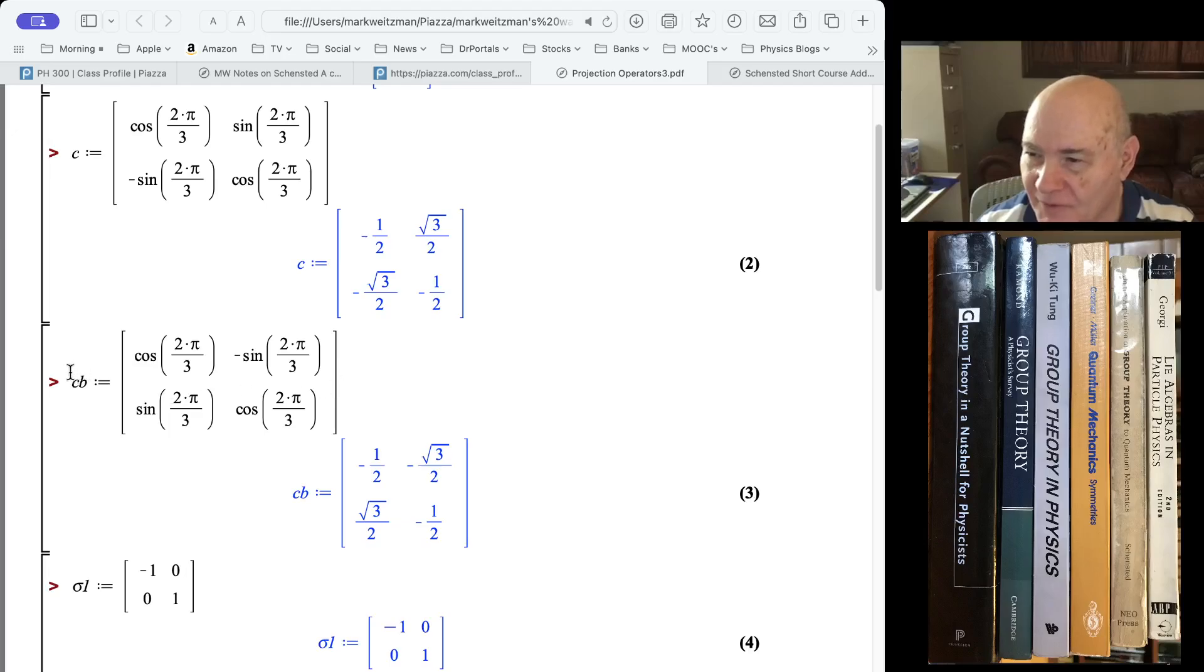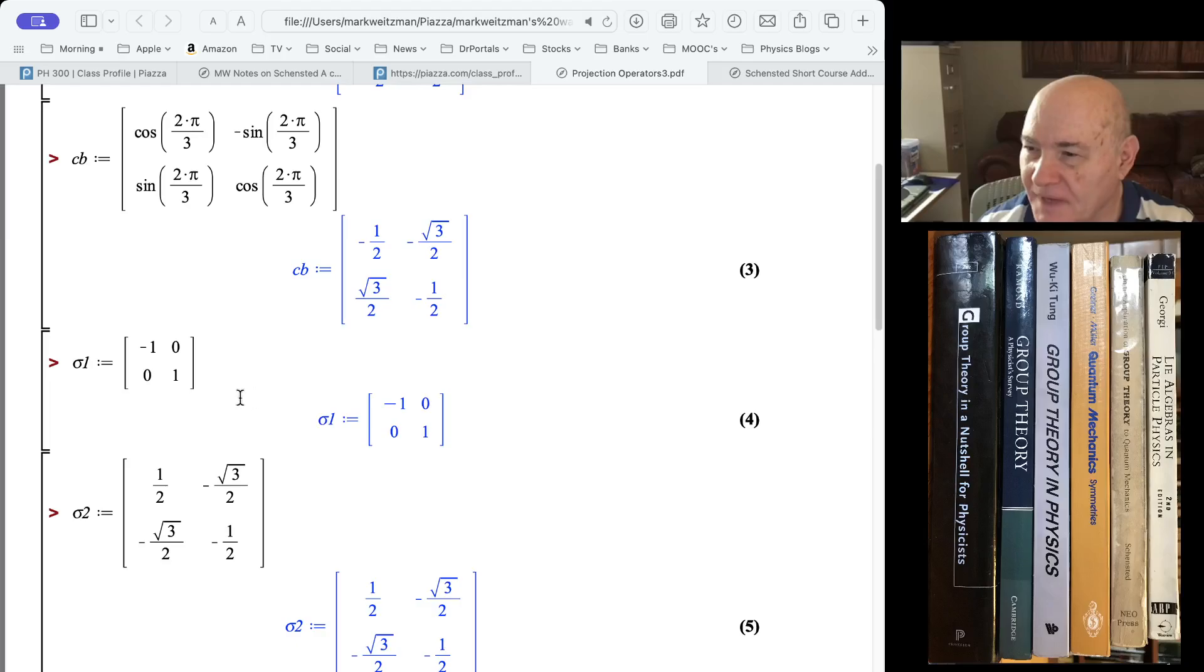Orthogonal means a matrix X is orthogonal if X transpose X equals the identity. And that will be the case for these matrices. The reflections will have determinant equal to minus 1. That's how you'll differentiate. Anyway, this is, I should have put a bar on top of the C.